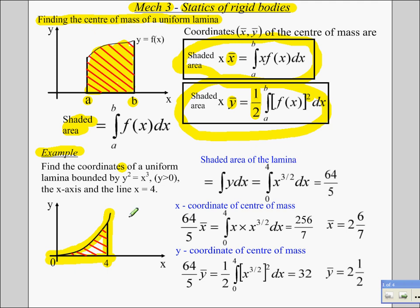Find the shaded area first. It's just the integral between these two limits of that curve, which gives us the integral of that. Obviously, I've square rooted both sides to get 64 over 5.